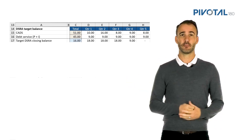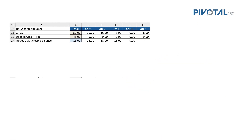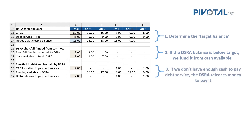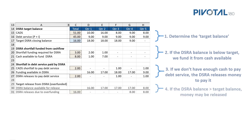So what are the four components? Number one, we need to calculate our DSRA target balance. Number two, if the DSRA balance is below the target balance, we fund it from any cash available. Number three, if there isn't enough cash to pay our debt service, our DSRA will release money to pay it — that is the core purpose of the DSRA. Number four, if the DSRA balance is greater than the target balance, the extra money in the DSRA account may be released into the waterfall.